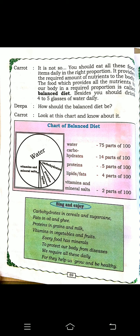The food which provides all the nutrients — carbohydrates, proteins, lipids, vitamins, mineral salts — to our body in a required proportion is called a balanced diet. We must also drink 4 to 5 glasses of water daily.